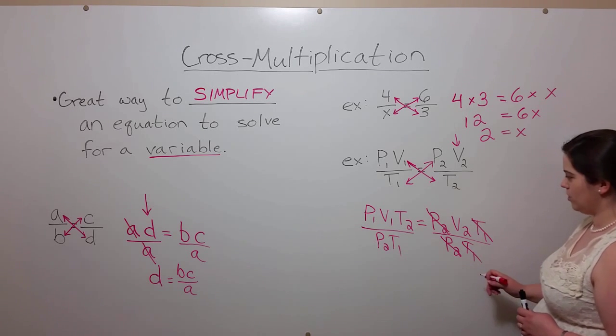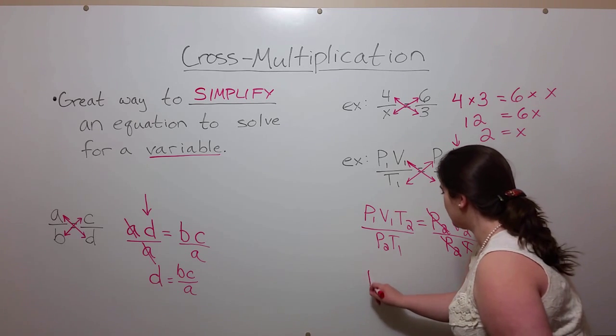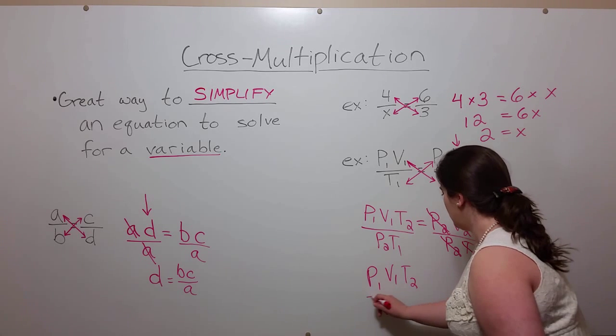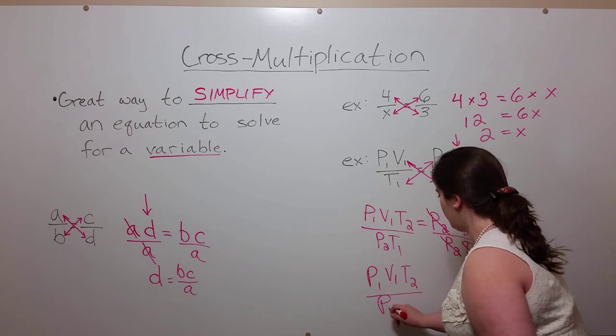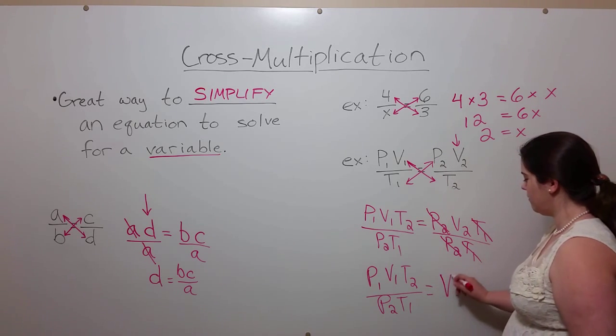These T1s will cancel and we get the end product being that P1 times V1 times T2 divided by P2 times T1 equals V2.